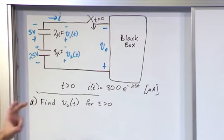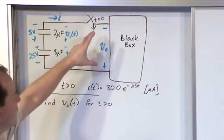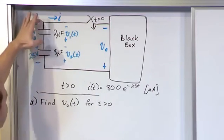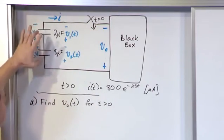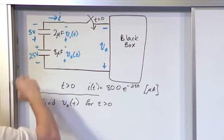If we want to find V0, the voltage across this is really going to be the sum of the voltages across both capacitors. Since we know the current going through this capacitor - sorry, the current going through this capacitor...